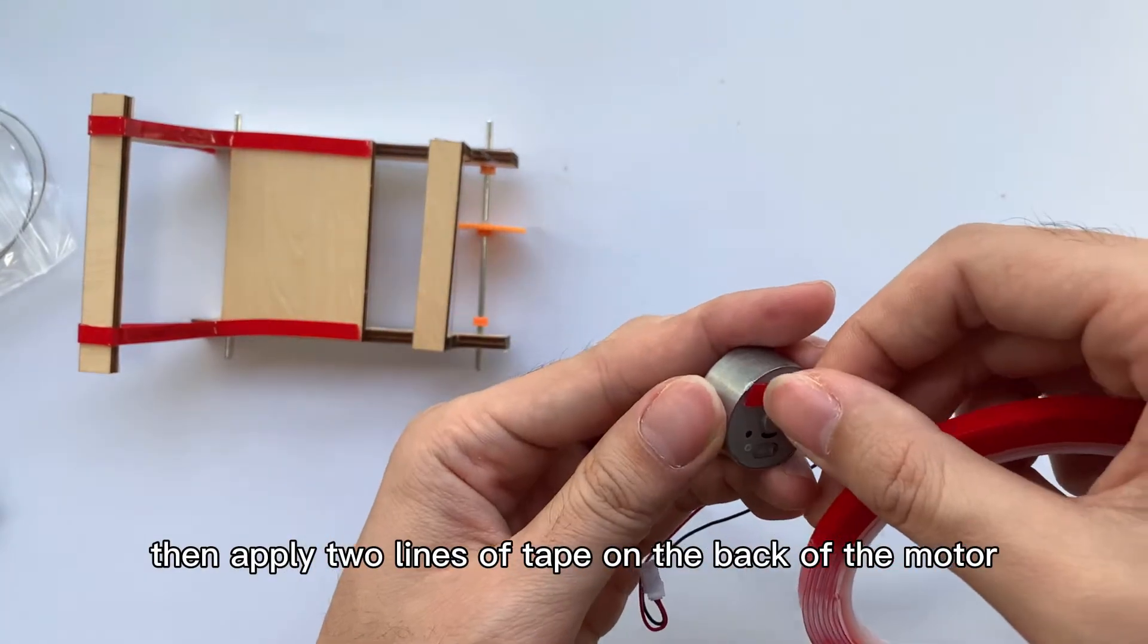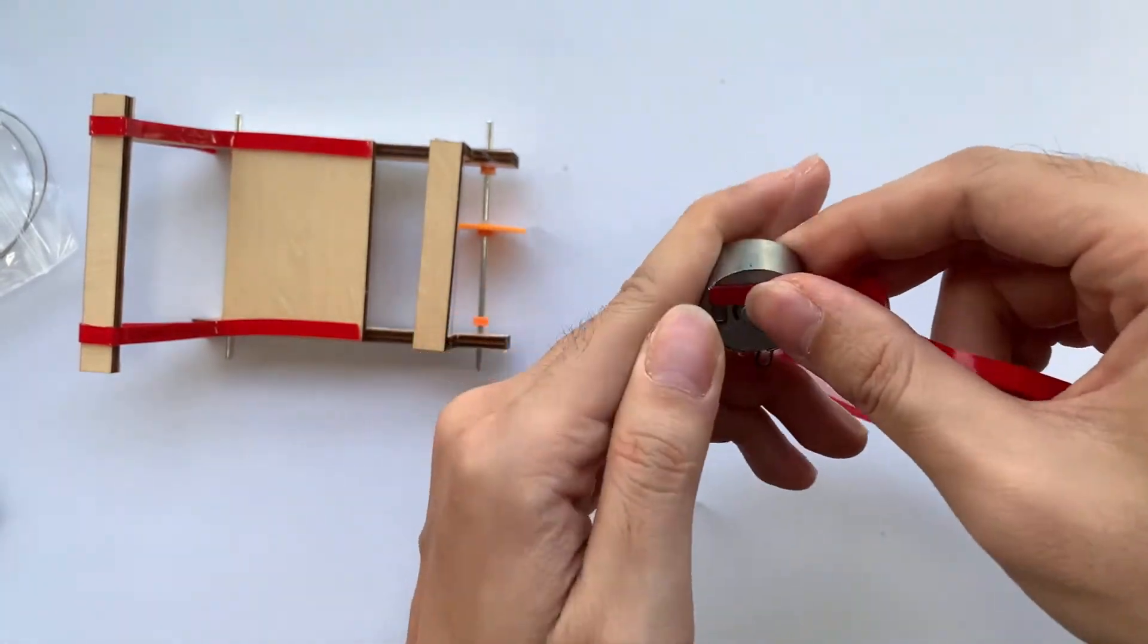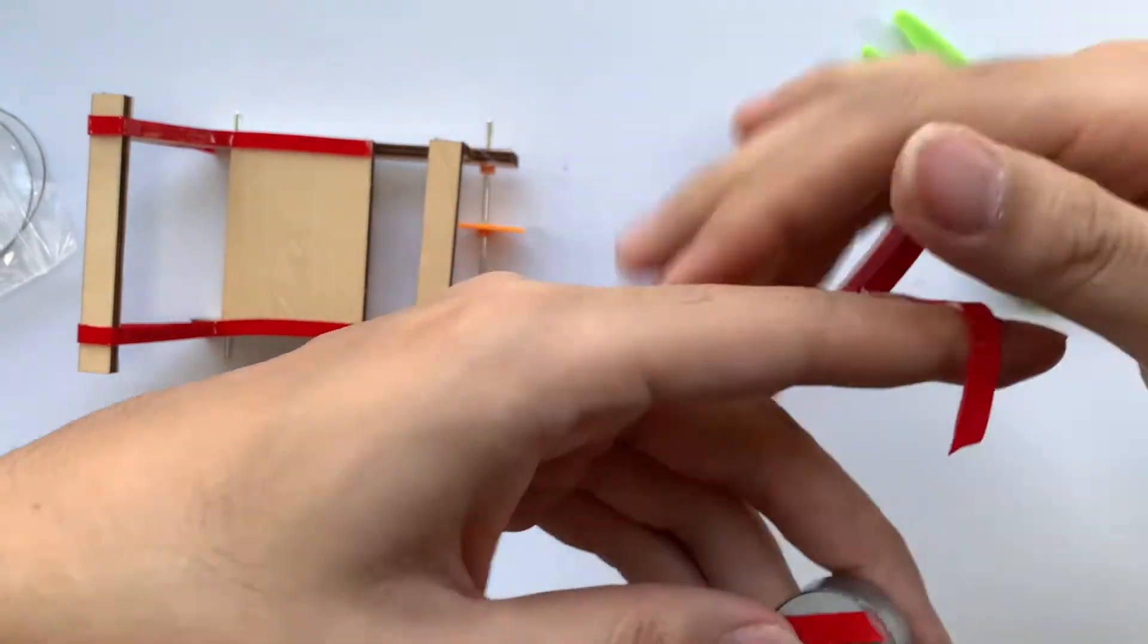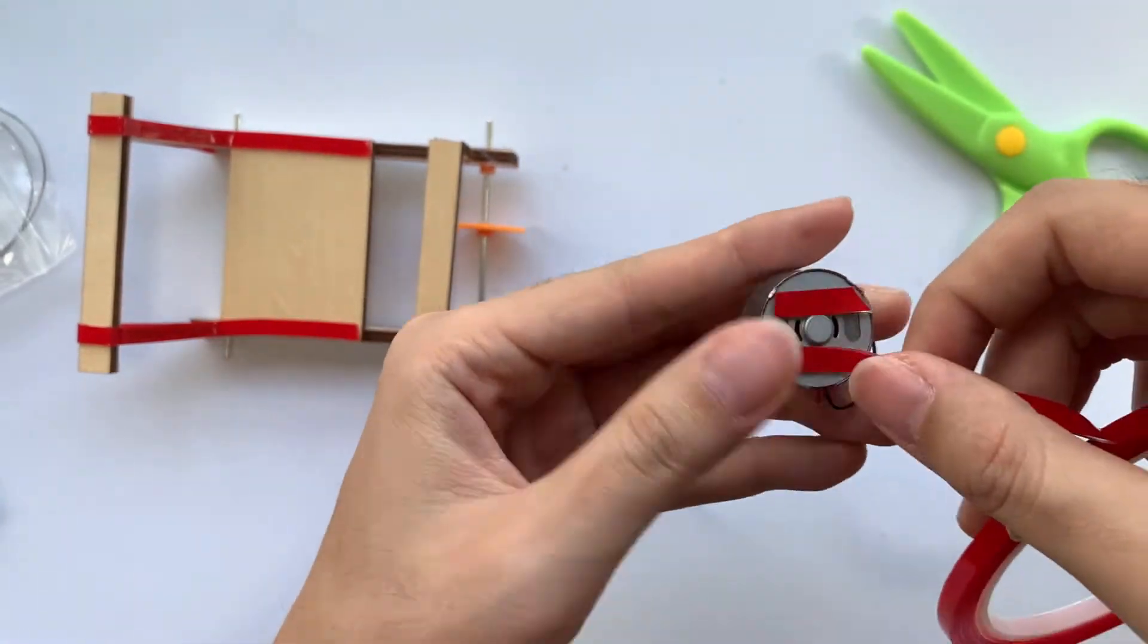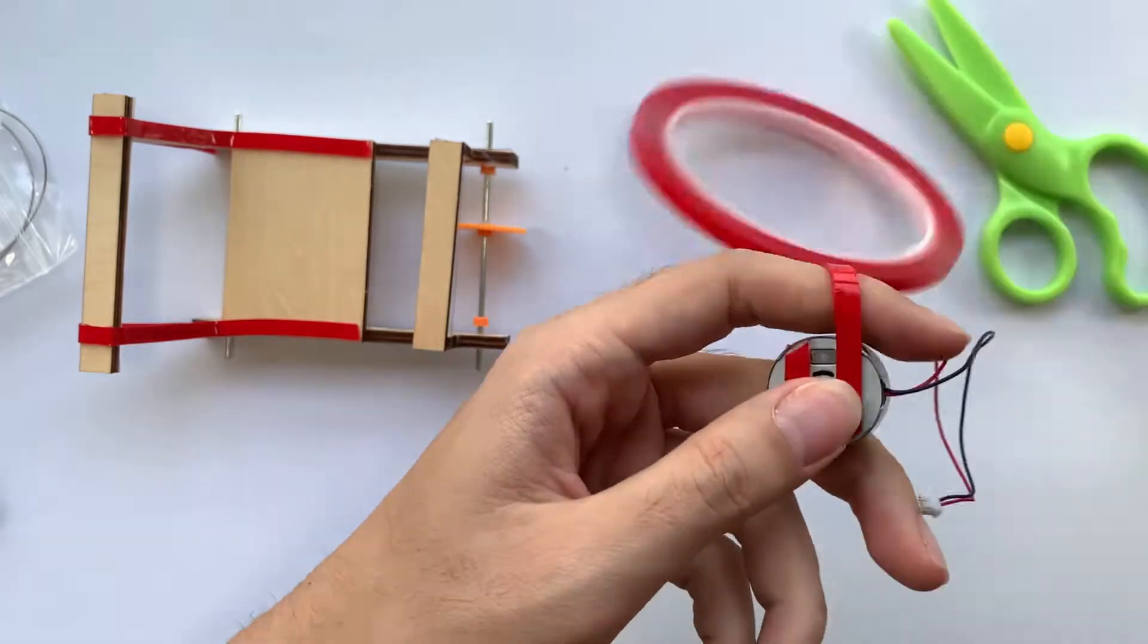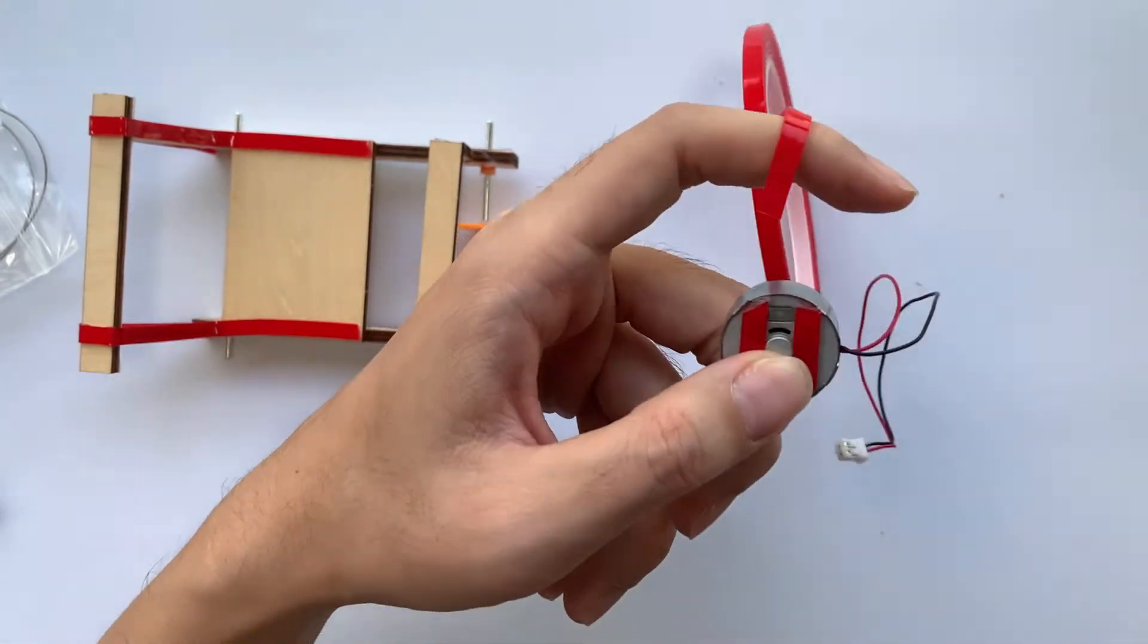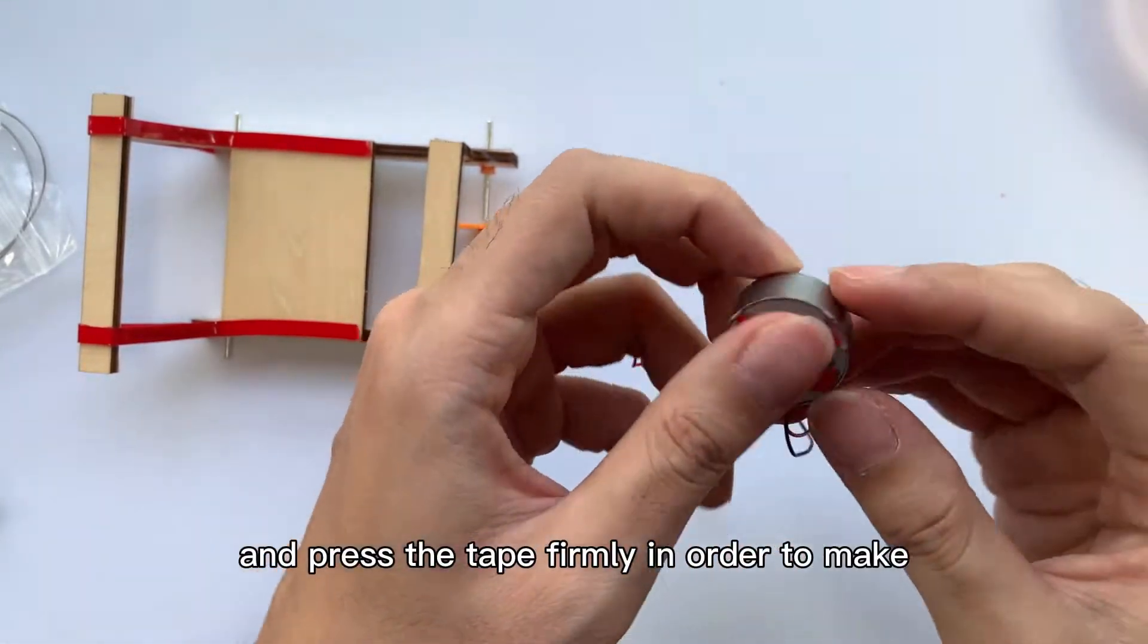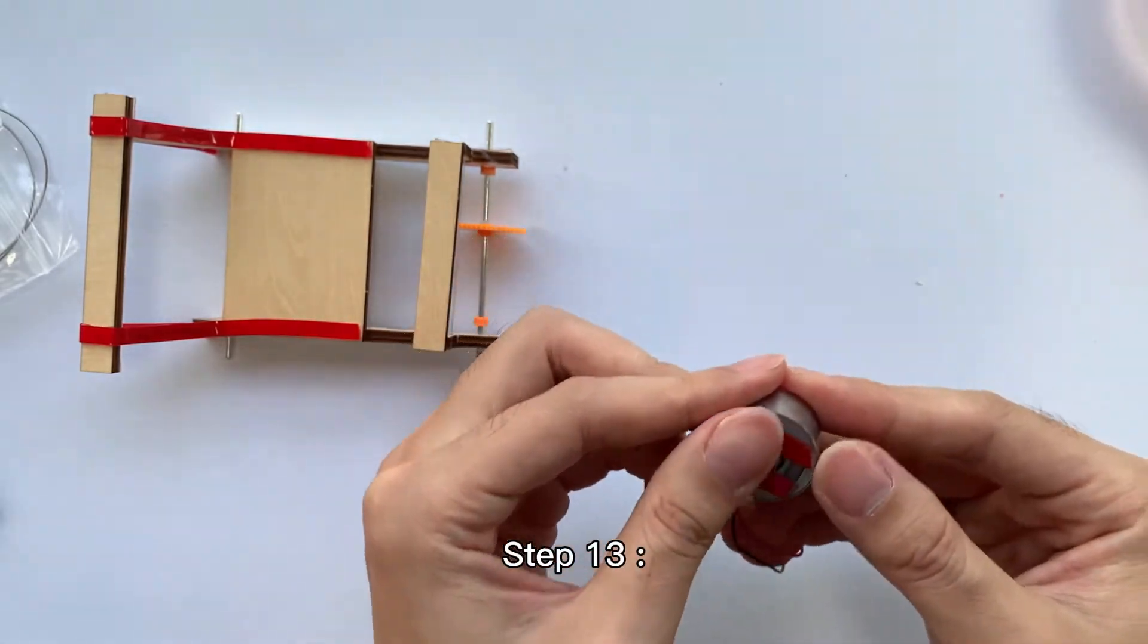Then apply two lines of tape on the back of the motor and press the tape firmly in order to make sure the motor is installed stably.